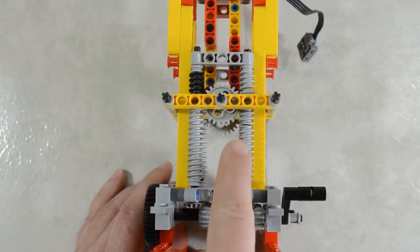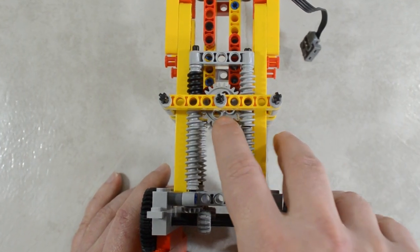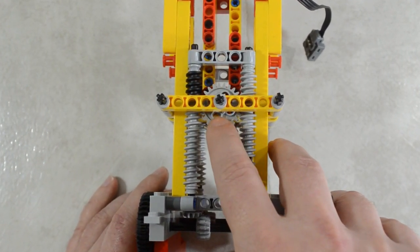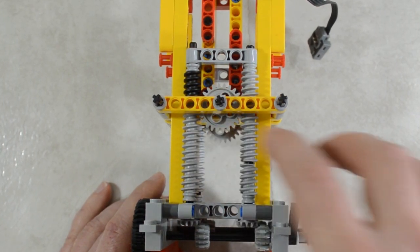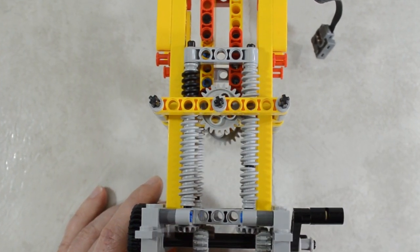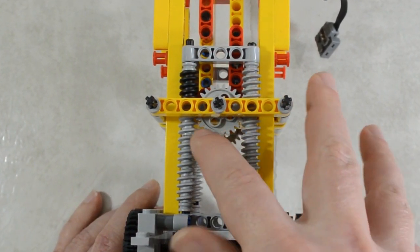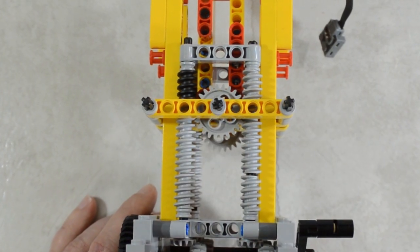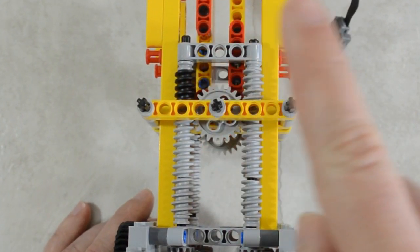So the real trick to this elevator rests in these gears which are one on either side. Normally when you power a gear with a worm gear it's going to turn.